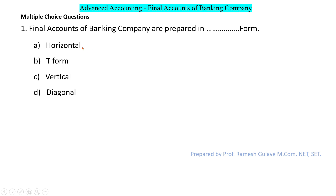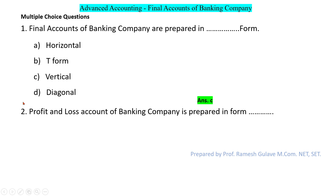The options are horizontal form, T form, vertical form, or diagonal form. The final accounts of banking companies are prepared in vertical form, so option C is the right answer.